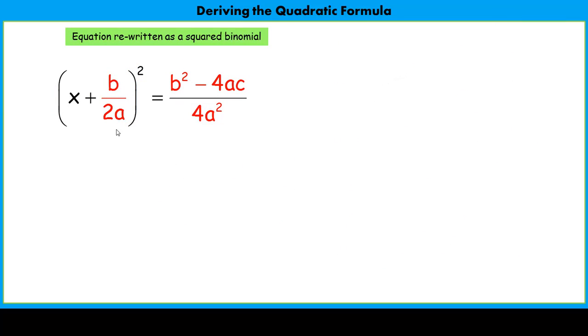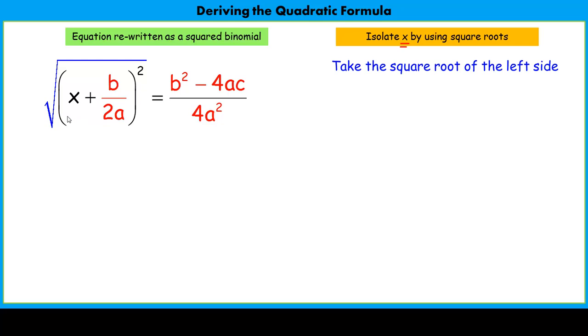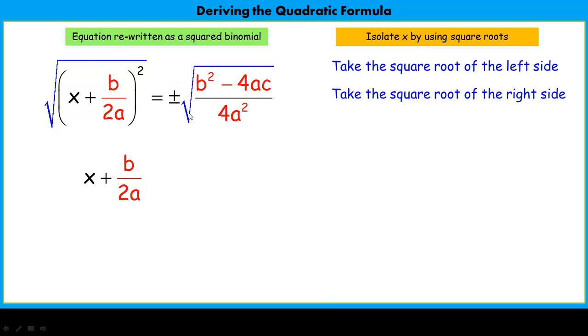Now that we have our equation rewritten as a squared binomial, we're going to isolate x. We're going to solve for x by getting it alone using the square roots method. I'm going to take the square root of the left side, where the square root of something squared is just its base. This is just an inverse operation. Taking the square root undoes the square, leaving just x plus b over 2a. But if we've taken the square root of this side, we also have to take the square root of the right side. When we take the square root of the right side, we need to consider both the positive and negative roots. That's where that plus or minus comes in.